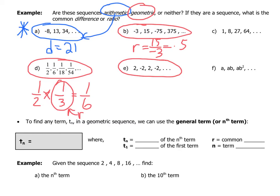Sequence E is also geometric. The ratio between term 2 and term 1 is −1. Multiplying 2 by −1 gives −2, times −1 gives 2, times −1 gives −2, and so on. So this is a geometric sequence with a common ratio of −1.